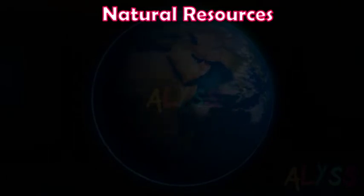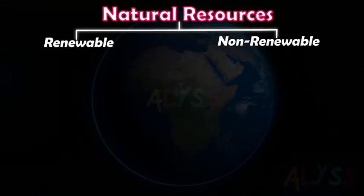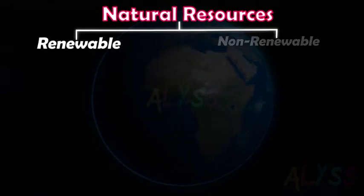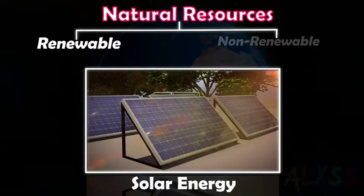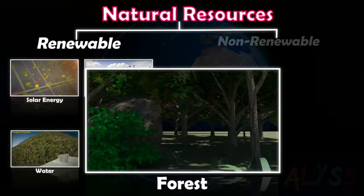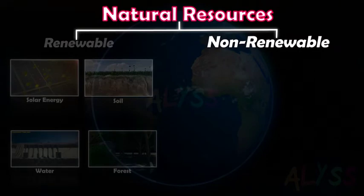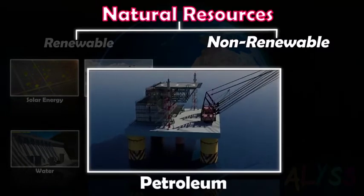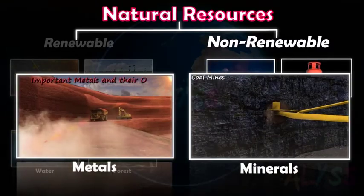Natural resources are mainly of two types: renewable and non-renewable. Renewable natural resources are replenished in nature in a cyclic manner. Examples are solar energy, soil, water, forest, etc. Non-renewable resources cannot be replenished through natural processes. Examples are petroleum, natural gas, metals, and minerals.